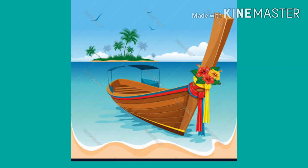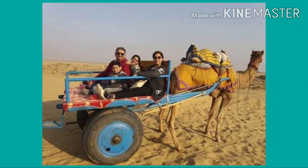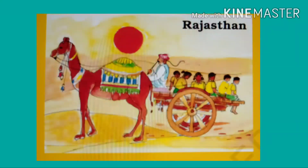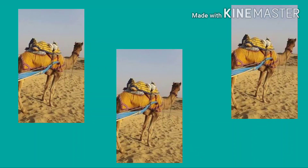Our next topic is the introduction of camel cart. In desert areas like Rajasthan, there is sand all around and it gets very hot in the day. Children use a camel cart to reach school. Camel is known as the Ship of the Desert. Camel's feet are wide so they can walk on sand more easily — their huge feet help them walk on sand without sinking into it. A camel can go a week or more without water and several months without food. They can drink up to 46 liters of water at one drinking session.